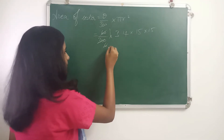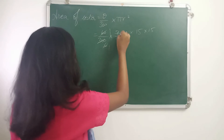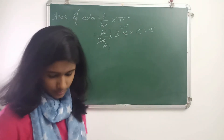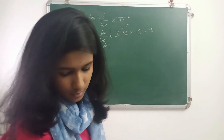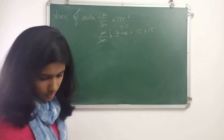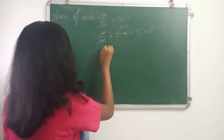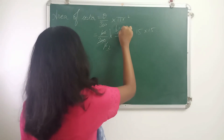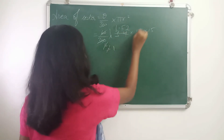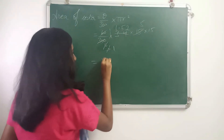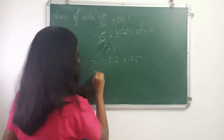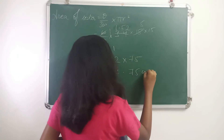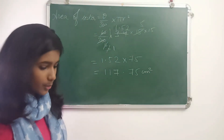Cancelling 60 by 360 we get 1 by 6. We can cancel 6 with a factor of 2, giving 1.52. Then 1.52 into 75 gives us 117.75. So the area of the sector is 117.75 cm squared.